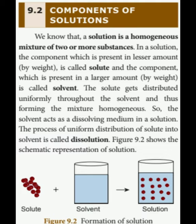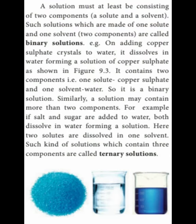Now we are going to see what are binary solutions and ternary solutions. If a solution contains only two components — one solute and one solvent — we call it a binary solution. For example, adding copper sulfate crystals to water gives a binary solution with two components. A ternary solution has three components: for example, if salt and sugar are both added to water, we have two solutes and one solvent, which forms a ternary solution.